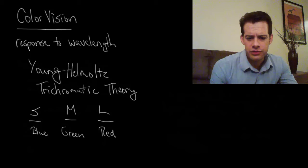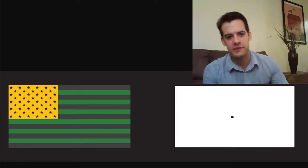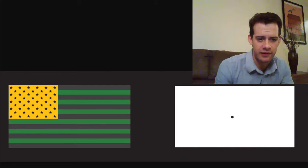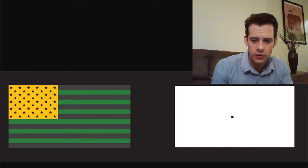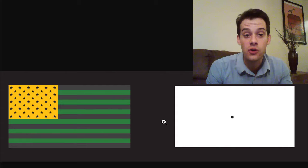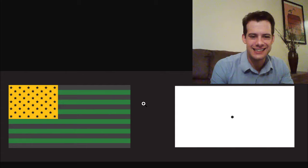So there is something that isn't really explained by this trichromatic theory. You've probably seen something like this before. So if you stare at the center of this flag image here, you stare for a few seconds, you can pause the video if you want to stare longer, and then you switch your vision over to the white background here, you'll see a red, white and blue version of the American flag. So what's going on here? How do we explain this? It's not just that we have three cone types. That seems to be insufficient.